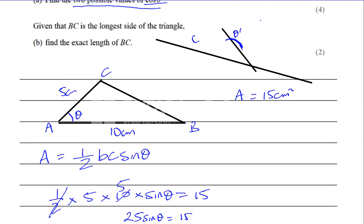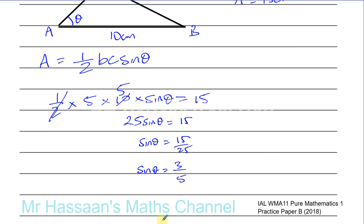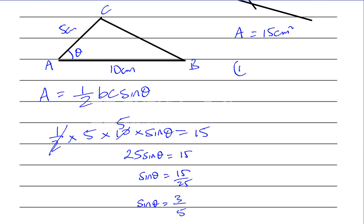That's not the final answer — the question asks for cosine theta. Some people will use the calculator to find the angle from sin θ = 3/5, but that gives a rounded value and not an exact answer. Instead, imagine a right-angled triangle where sin θ = 3/5, meaning the opposite side is 3 and the hypotenuse is 5. By Pythagoras' theorem, the adjacent side is √(25 − 9) = √16 = 4. This is the classic 3-4-5 triangle. So cosine theta = 4/5.